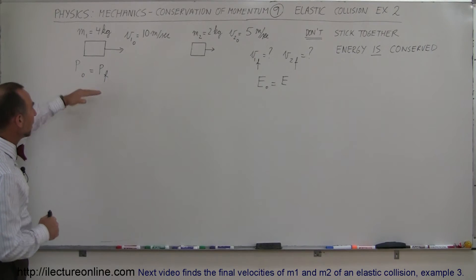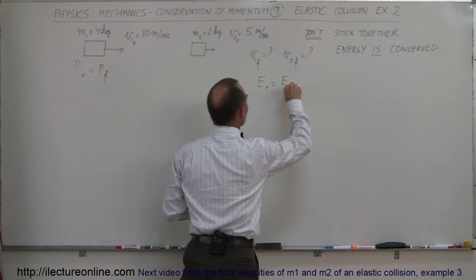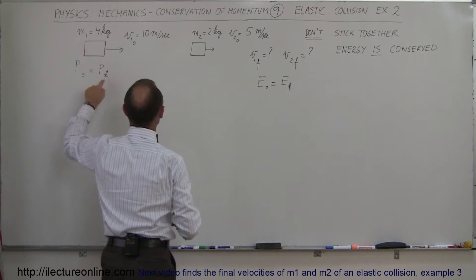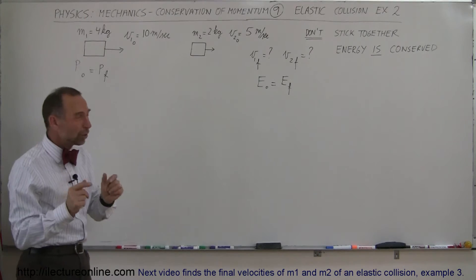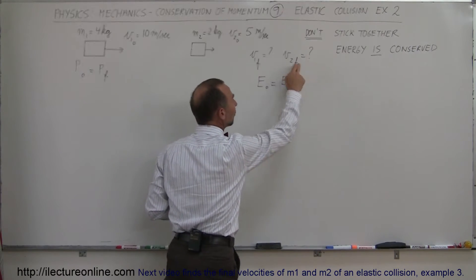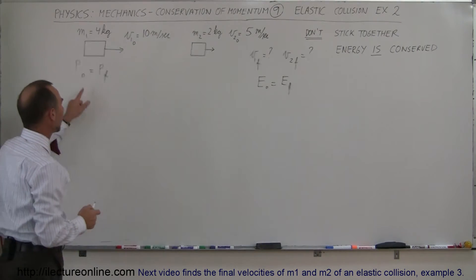Again, momentum is conserved and energy is conserved, and of course I should have E-final right here, which means that momentum initial equals momentum final and energy initial equals energy final. The reason why we need both equations is because there's going to be two unknowns, the velocities of both objects after the collision. Since there's two unknowns, we're going to need two equations.